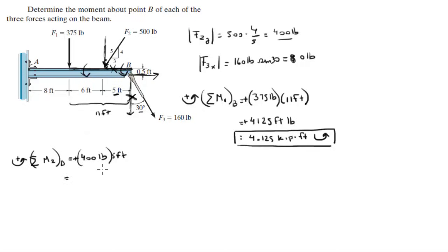Now 4 times 5 is 20, so 2,000 foot pounds positive, which means 2 kilopounds per foot turning counterclockwise. And that is the moment that F2 creates.